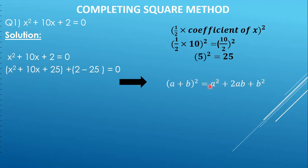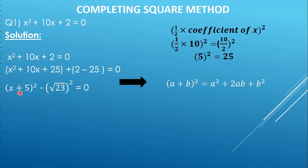To convert, take the square root of the first term — square root of x squared is x. Then take the sign from the second term, which is plus. Then take the square root of the last term — square root of 25 is 5. So we get (x + 5), then add brackets and the whole square. Applying this to our expression: the square root of the first term, sign of the second term, and square root of the third term — giving us (x + 5) the whole square.